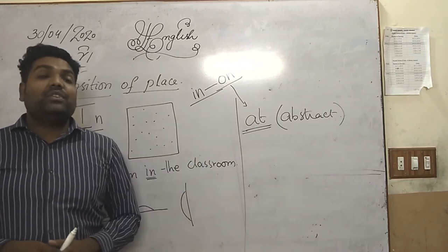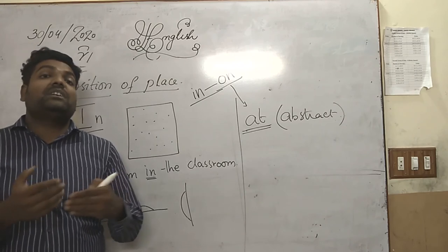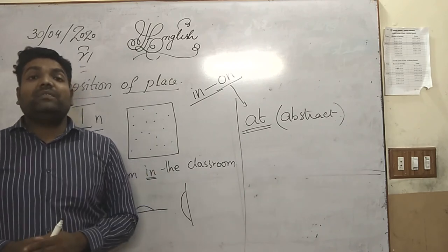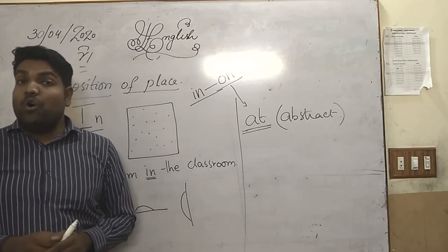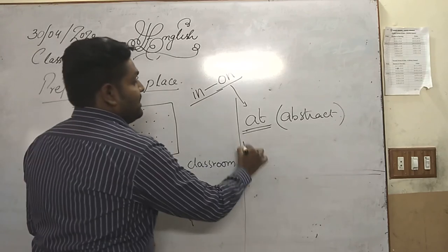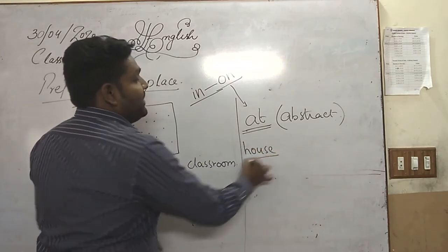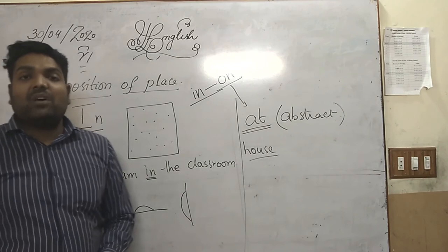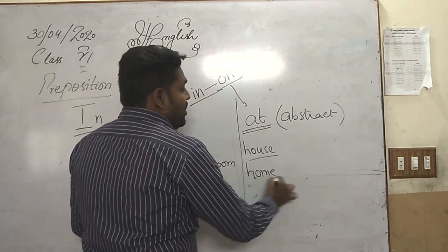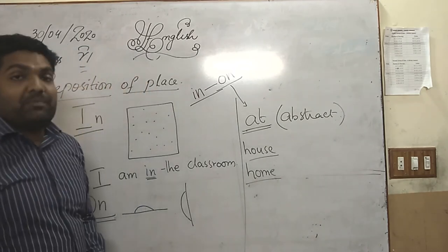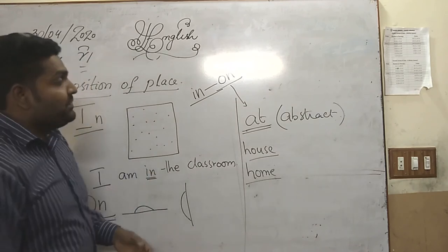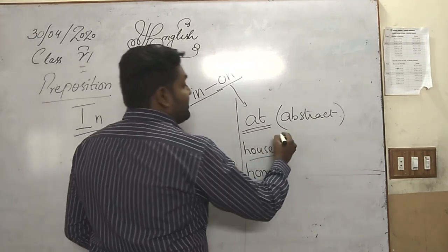We also use 'at' for abstract places — places that are not physically in front of us. For example, 'Where do you live? I live at home.' Home is an abstract place; the materialistic place is 'house'. We do not say 'I am at house', we say 'I am at home'. Home does not have any physical boundary — it is only connected with feelings. So we use 'at' for abstract places.